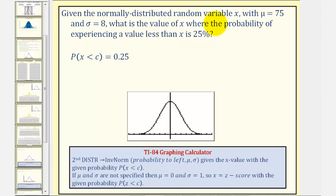Given the normally distributed random variable x with mu or mean 75 and sigma or standard deviation 8, what is the value of x where the probability of experiencing a value less than x is 25%? Or otherwise, the probability of x being less than c equals 0.25. What is this value of c?